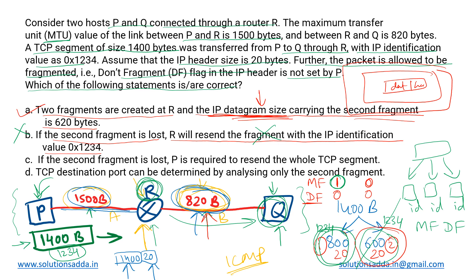Option C states that if the second fragment is lost, P is required to resend the whole TCP segment — which is exactly what we just saw, so option C is correct. Option D states that the TCP destination port can be determined only by analyzing the second fragment. However, the TCP header containing source and destination port numbers is present in all fragments, not just the second one. So any fragment can be used to determine the destination port. Option D is incorrect. The correct answers are A and C.